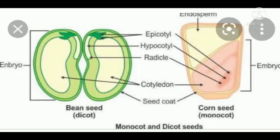You can observe seed parts by soaking seeds in water overnight. After soaking, the seed absorbs water, swells up, and shows its different parts more clearly — it contains fleshy seed leaves and the baby plant inside. Seed leaves are also called cotyledons. Two seeds are shown here: a bean seed and a corn seed. On the basis of cotyledons, seeds can be of two types: monocotyledons and dicotyledons, or monocot and dicot for short.